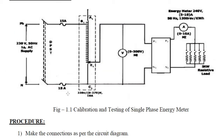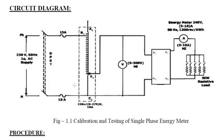Looking at the circuit diagram: a variac (auto transformer) is connected to the supply. After the variac, a voltmeter is connected to measure the supply voltage. The energy meter has four terminals — two pairs of phase and neutrals. One pair is at the source end and another pair is at the load end. P1 and N1 are the source side terminals of the energy meter; P2 and N2 are the load side terminals.